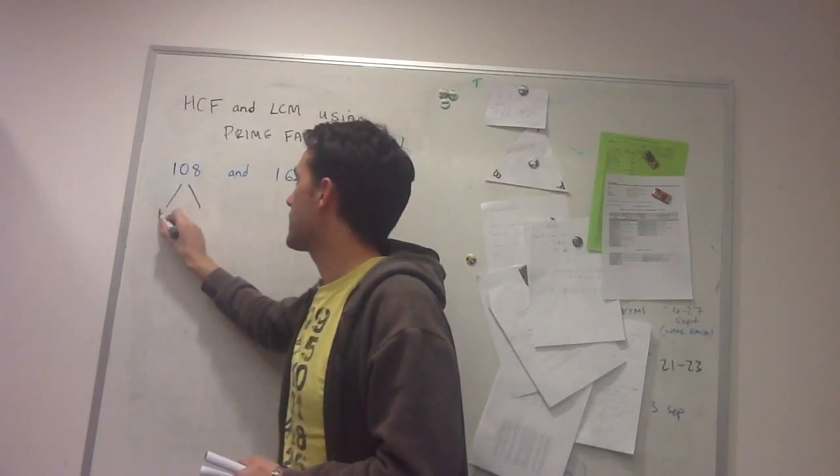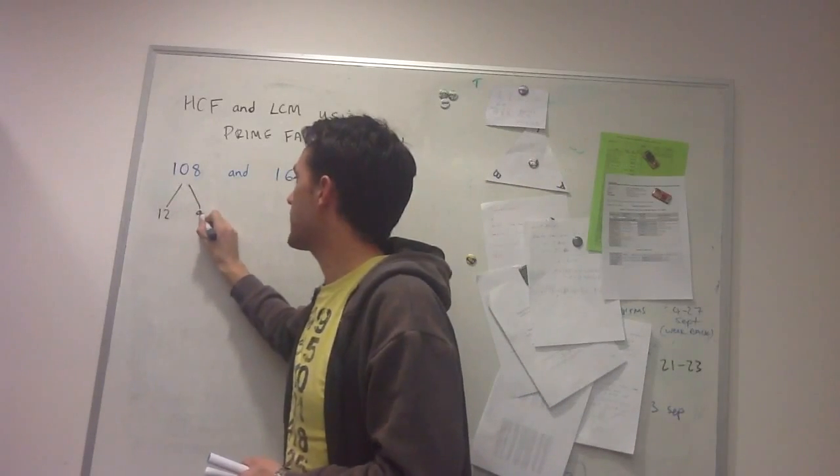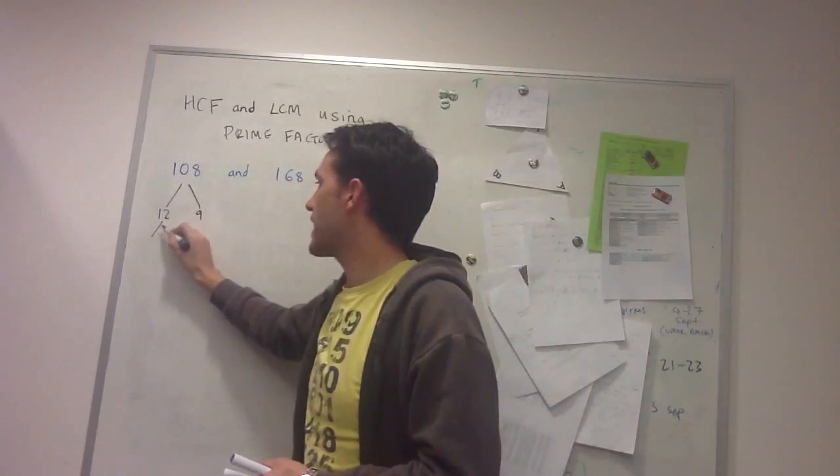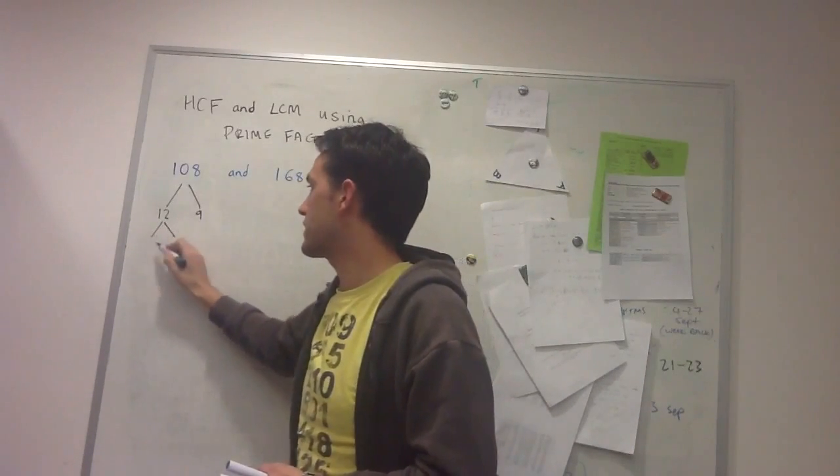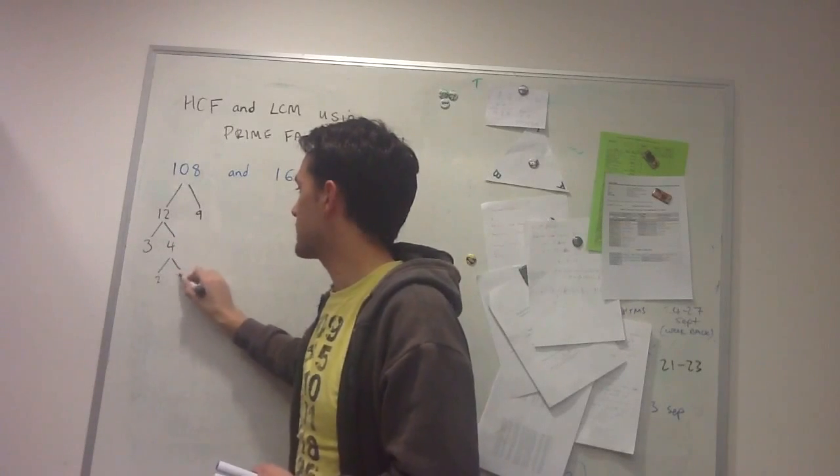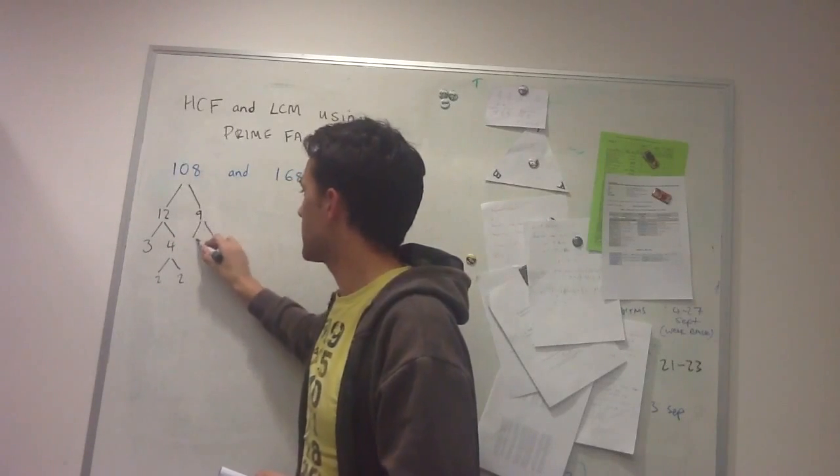So here I've got 12 times 9, it's in the 9 times tables, and then I keep on breaking down until I get to primes. So 12 goes to 3 times 4, 4 goes to 2 times 2, and the 9 is 3 times 3.